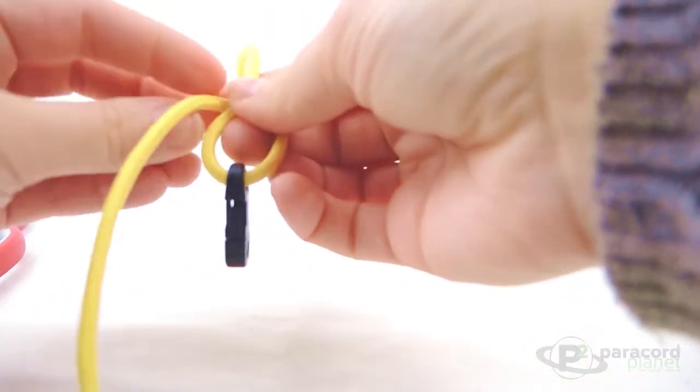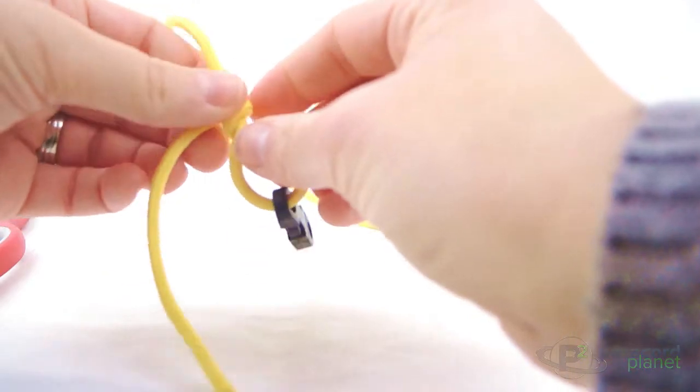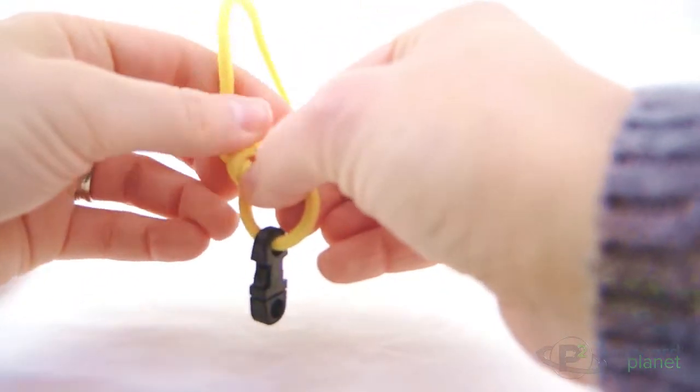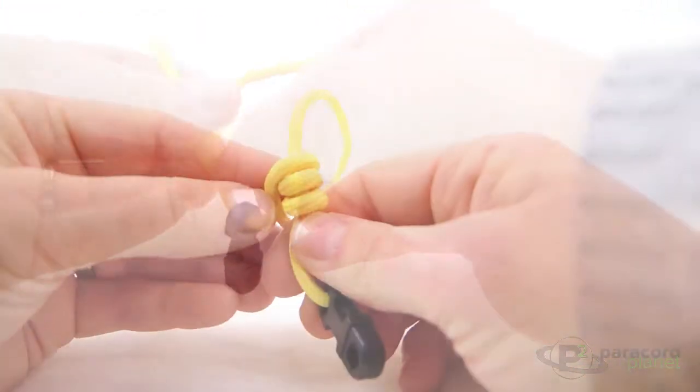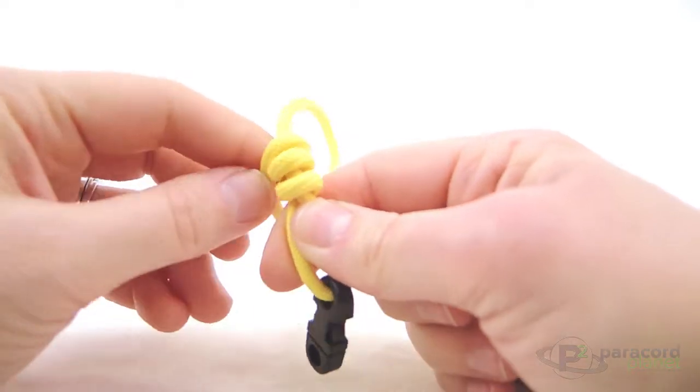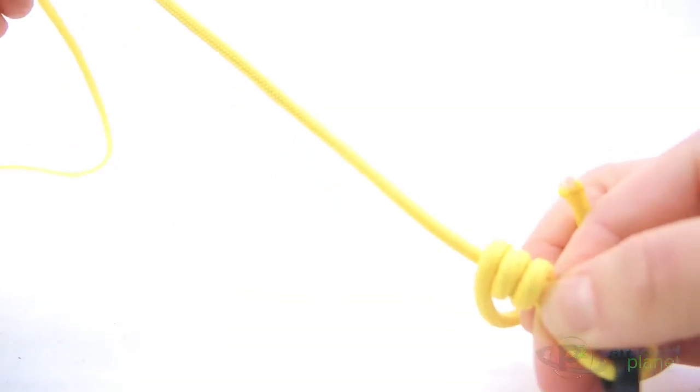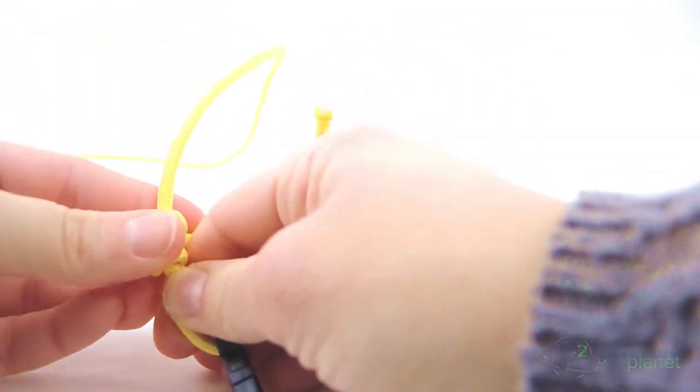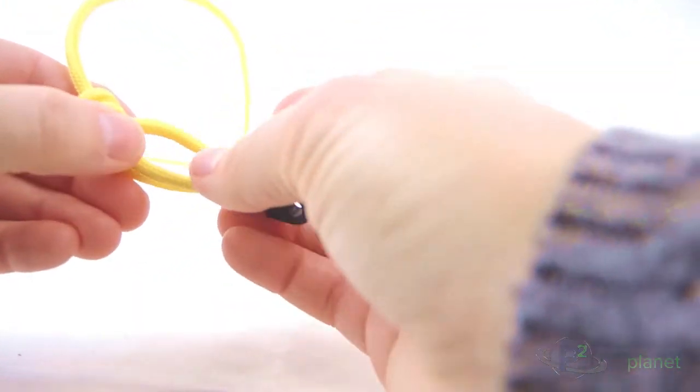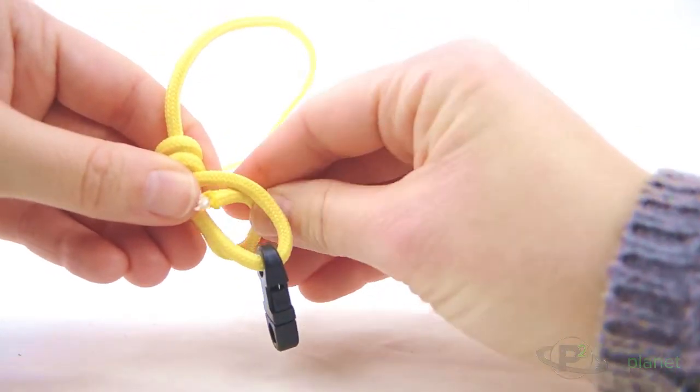Wrap it around there three times. Okay, so at this point when you have your three loops around the base of your bracelet right here, you will want to take the small end and put it through the loop right there.